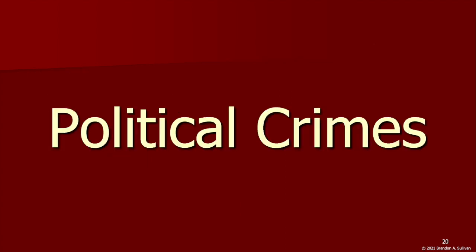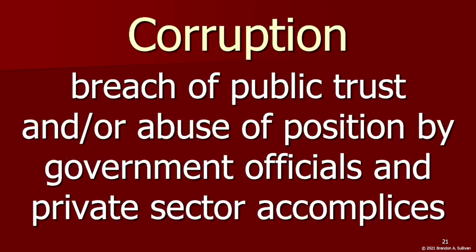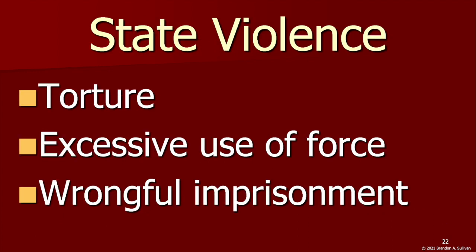We'll turn now to political crimes — acts designed to undermine an existing government and threaten its survival. They include a wide array of behaviors. One is corruption: a breach of public trust and/or abuse of position by government officials and private sector accomplices, often done by using their position to illicitly gain or hold on to money and power. Closely related is state corporate crime, where public and private actors coordinate together for some type of illicit gain or to perpetrate some type of social harm against the public. Some political crimes are acts of state violence committed by state actors against civilians.